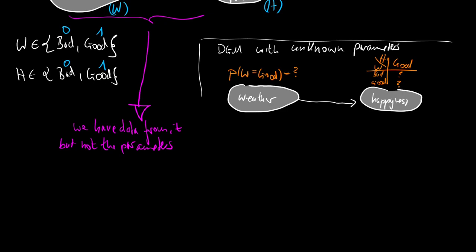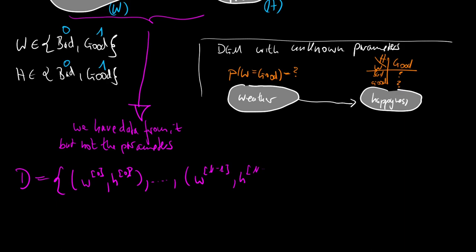How does this data look? This data is a collection of states of possible weather and possible happiness — from the zeroth sample all the way to the n-1th sample. For instance, this could be a collection like: 0, 1, 1, 0, and so on — meaning bad weather but good mood, good weather but bad mood, and so on. We have multiple hundreds of such samples.